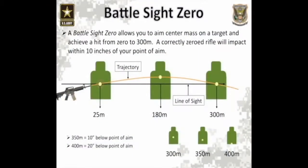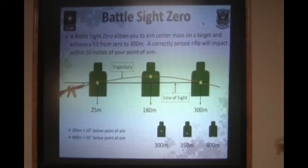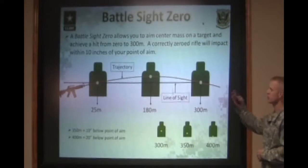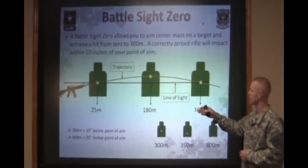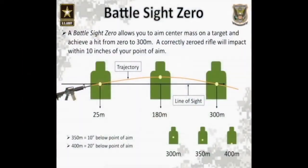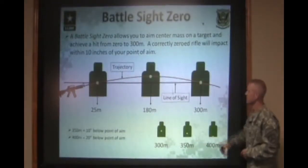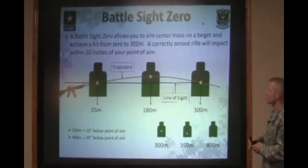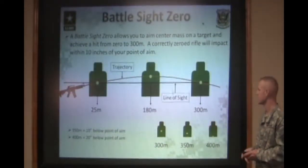A battle sight zero allows you to aim center mass on your target and achieve a hit from zero to 300 meters. The first place the bullet crosses our line of sight is at 25 meters — point of aim, point of impact. Around the 180-meter mark is where the bullet's at its highest point in trajectory, and it's going to be about 7 to 10 inches higher than your point of aim on that target. Then that bullet comes back down and crosses your line of sight again at 300 meters, letting you achieve a point of aim, point of impact hit on that target.